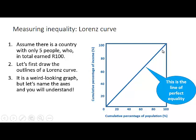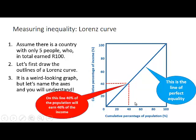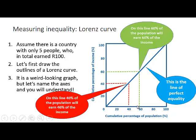This is the line of perfect equality. What it shows us, for example, is that on this line 40% of the population will earn 40% of the income, and 60% of the population will earn 60% of the income. That is why this is the line of perfect equality.